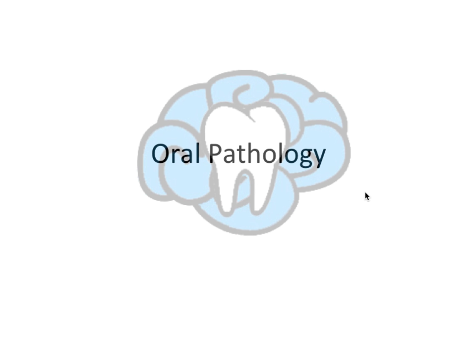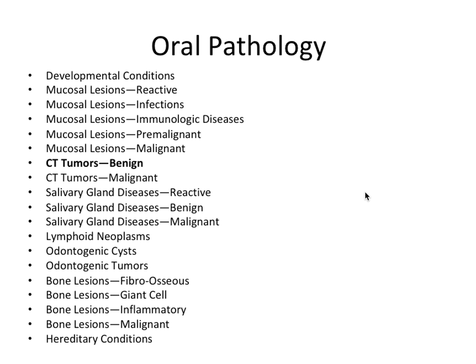Hey guys, it's Ryan. In this video we're going to continue to talk about oral pathology and we are officially done talking about mucosal lesions. We covered quite a bit so far — the last five videos were all about the mucosa — and now we're going to go one layer deeper to the submucosa, where we're going to talk about connective tissue tumors. The salivary glands also live there. Connective tissue tumors manifest as lumps or bumps within the submucosa layer.